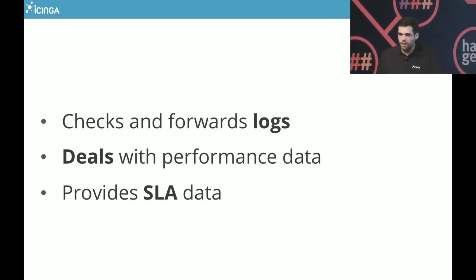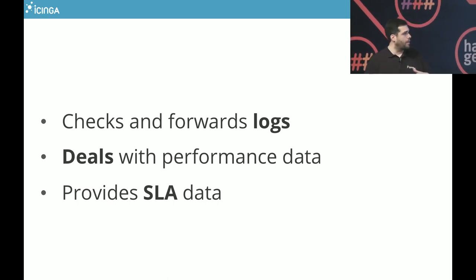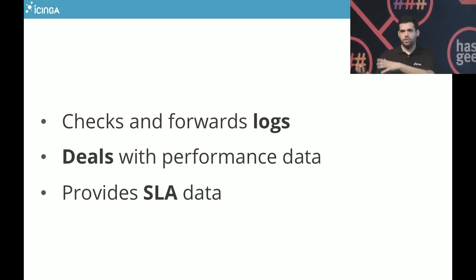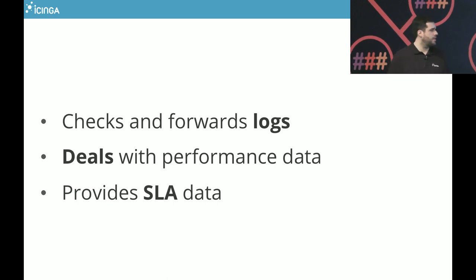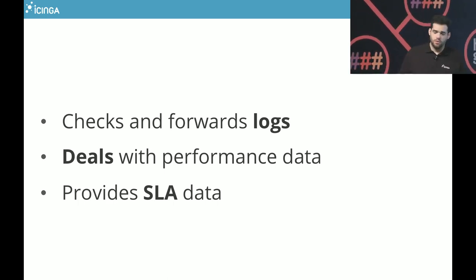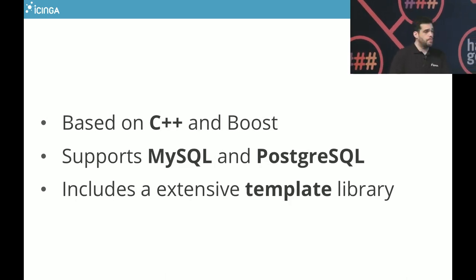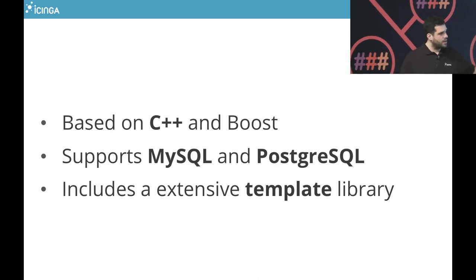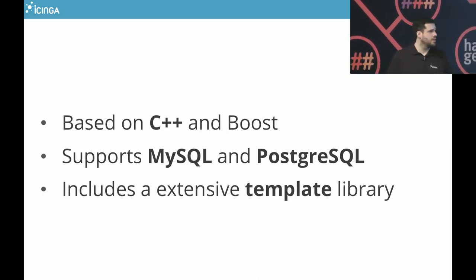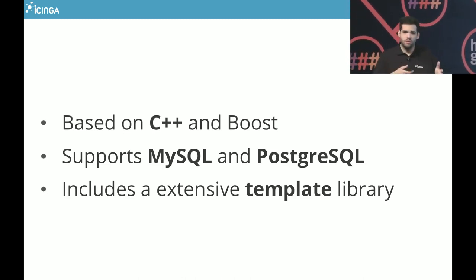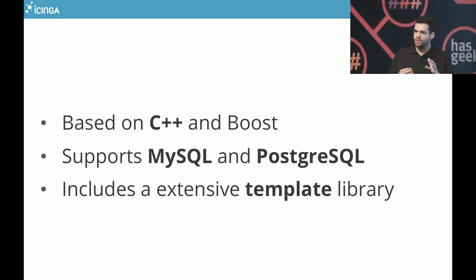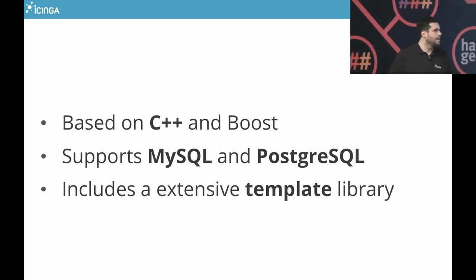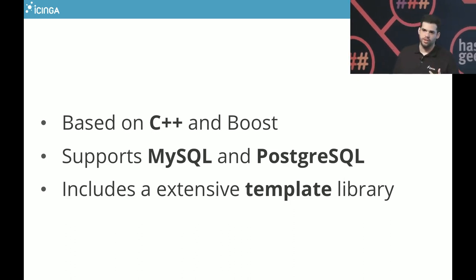We check and forward logs — all the information we gather we try to provide to other tools. We provide logs using GELF output, writing to Logstash or Graylog. We can write performance data to Graphite, InfluxDB, or OpenTSDB. We also provide data for SLA reporting in the database — supporting MySQL and Postgres as backends. The Nagios and old Icinga core was based on C; we work with C++ and Boost, which means we can run on every Linux and Unix, and also Windows. You can also use Icinga as an agent on a system.